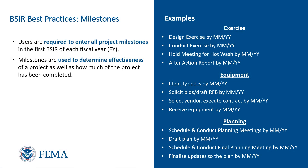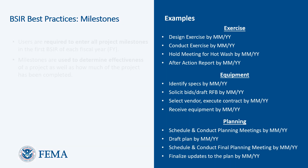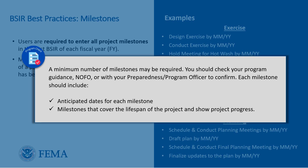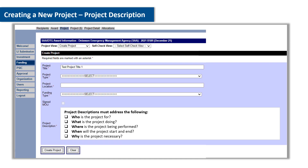In addition to project descriptions, VISR users are required to enter all project milestones in the first VISR of each fiscal year. Milestones, in conjunction with project descriptions, are used to determine the effectiveness of a project as well as how much of the project has been completed. Program check: a minimum number of milestones may be required — check your program guidance, NOFO, or preparedness program officer to confirm. Each milestone should include anticipated dates and cover the lifespan of the project to show project progress.